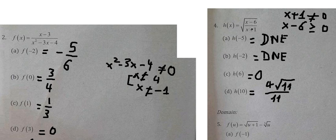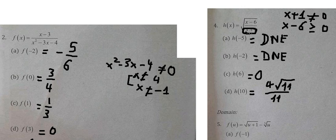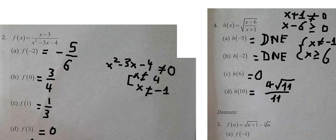We can see that negative six is smaller than positive one, which means we select based on the condition that must be positive. So s cannot equal negative one and s must be greater than or equal to six. The domain of this function should be like this.